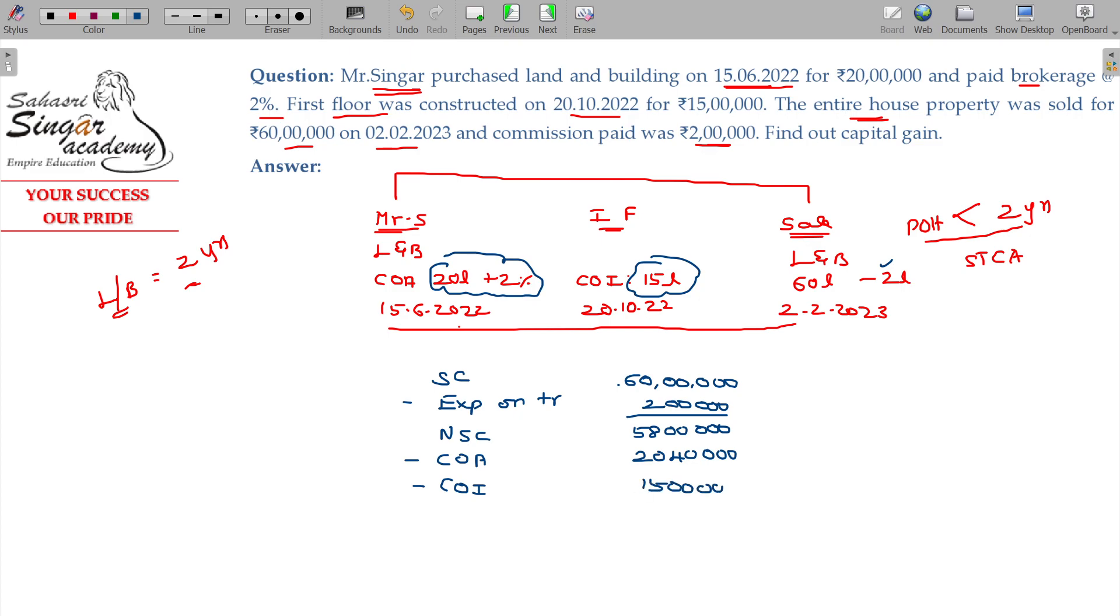So, in the entire property, one floor cost and two blocks, we have deducted. If I subtract these two, then I will get short term capital gain or loss, of course gain, 22,60,000 is my gain.